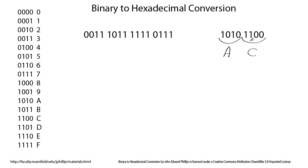The process is so quick and easy that computer professionals like to use hexadecimal numbers to represent binary numbers. We'll often write a little subscript 2 to indicate base 2 for binary, and a subscript 16 to indicate a hexadecimal number.